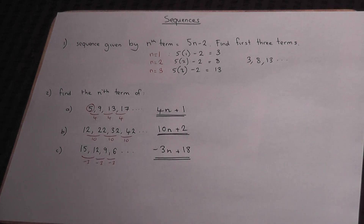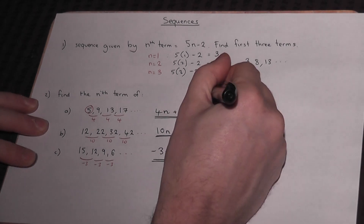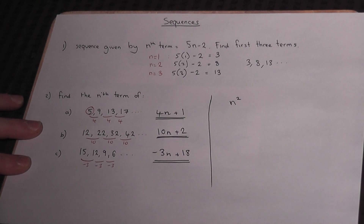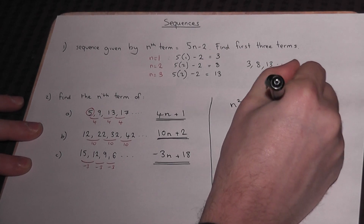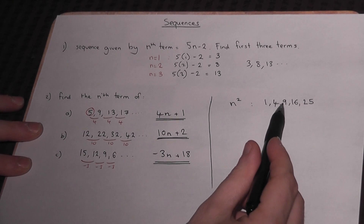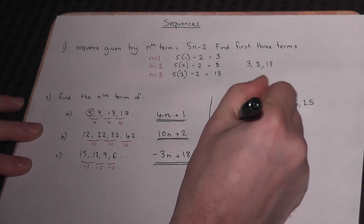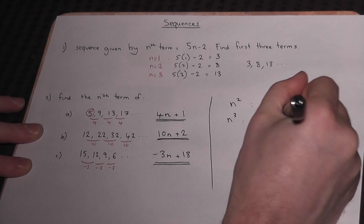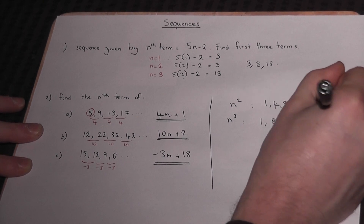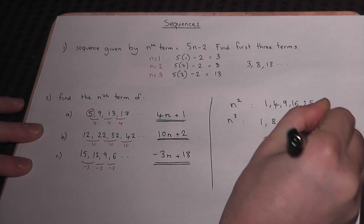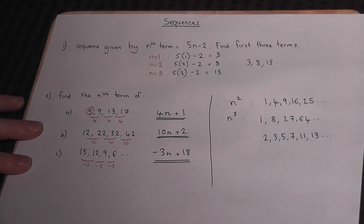So we can have linear sequences: find the terms given a formula, or find the formula given the sequence. I'll also mention some important special sequences to know. One is n squared — the square numbers — given by 1, 4, 9, 16, 25, and so on. The cube numbers are also worth knowing: 1, 8, 27, and so on. Another one to be aware of is the prime numbers: 2, 3, 5, 7, 11, 13 — numbers which have only two factors.